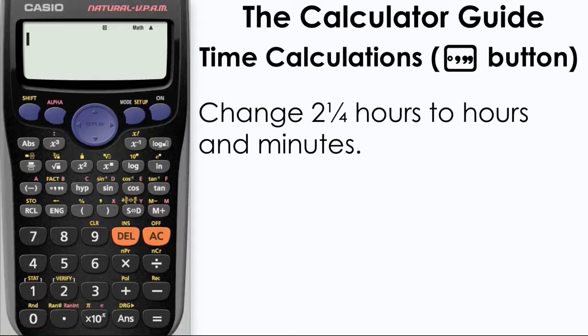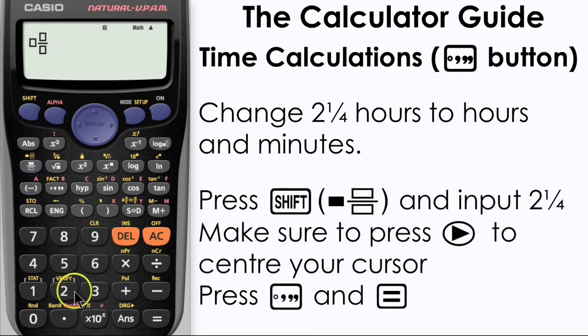We're going to use the calculator to change two and a quarter hours to hours and minutes. Press shift and then the mixed number button and input two and a quarter. Make sure that you press right on the replay button to center your cursor and then press the degrees minutes and seconds button and then equals.